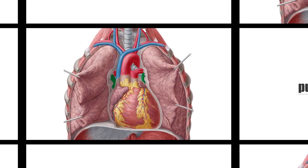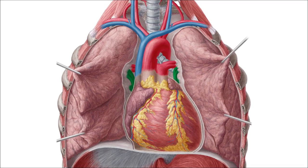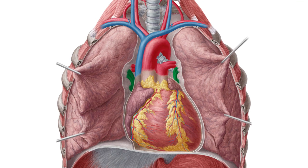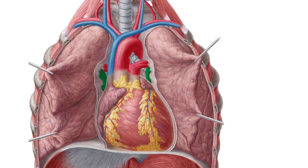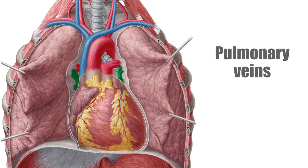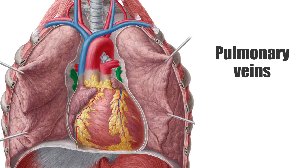The topic is fairly simple and straightforward with one very important exception. The exception is that any other time we use the term vein, we are discussing a vessel that carries deoxygenated blood. But in the case of the pulmonary veins, they are carrying oxygenated blood.